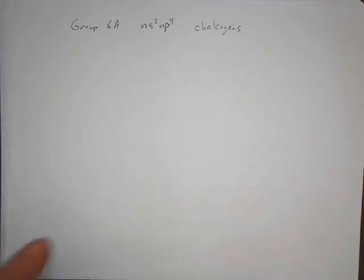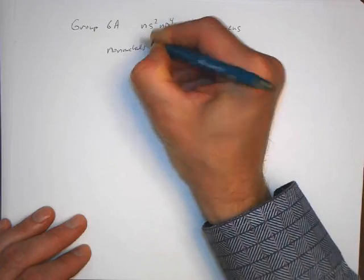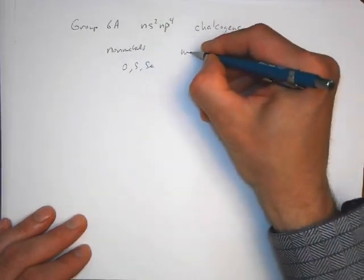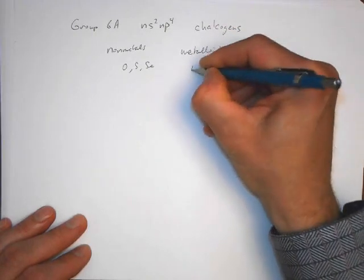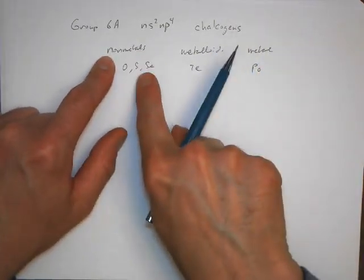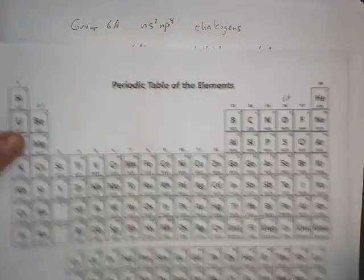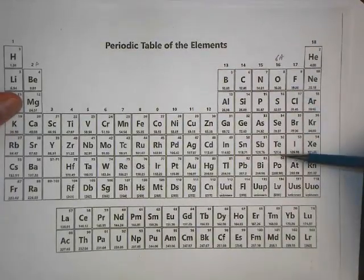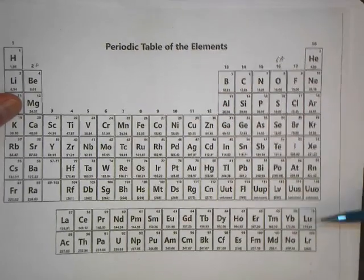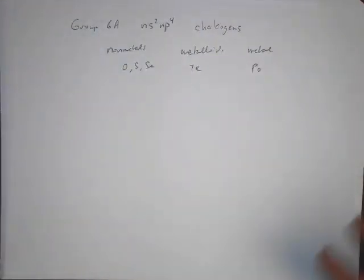Chalcogens, meaning that they were originally, when they were found, they were with copper. Here we have nonmetals: oxygen, sulfur, and selenium. Metalloids: tellurium. And then polonium is a metal. There's more and more nonmetals as we go over in the periodic table. The number of nonmetals - these three are nonmetals now. Tellurium is a metalloid, and that's a metal. The chalcogens are oxygen, sulfur, selenium, and so on. These are things that like to be with copper, essentially. That's why they have that name. Sulfur and selenium are oftentimes found in copper deposits.